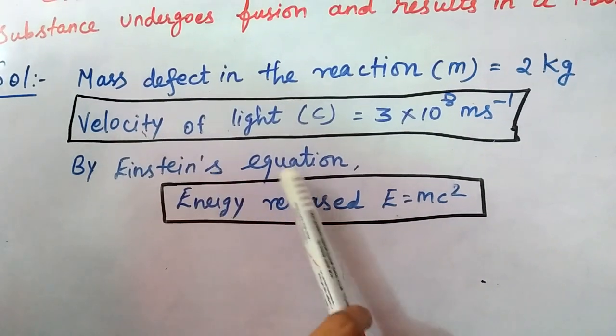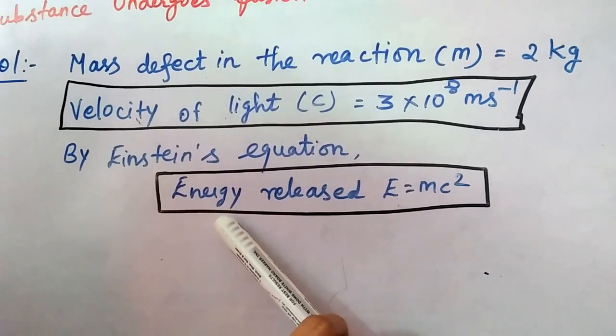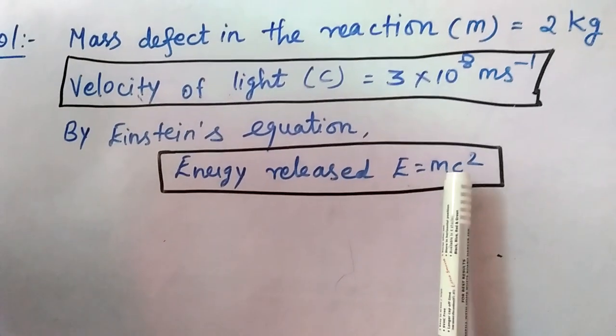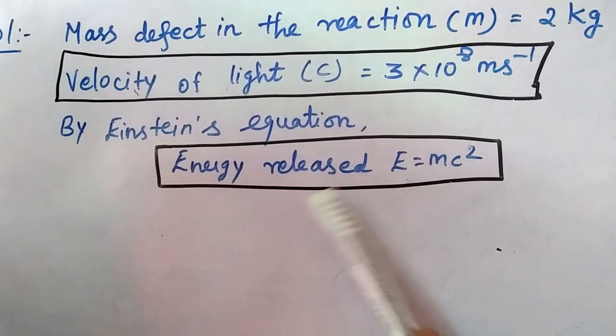Another Einstein's equation. Einstein's equation is the energy equation. Energy released E equals mc squared. This is the energy released equation.